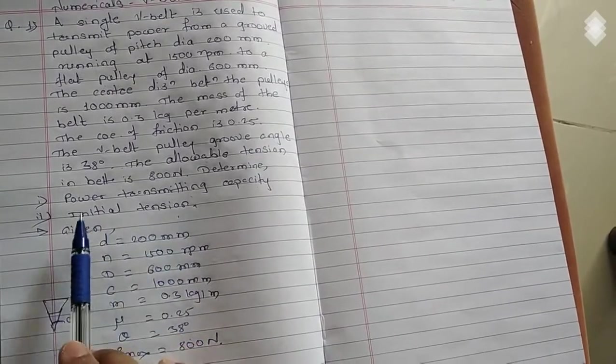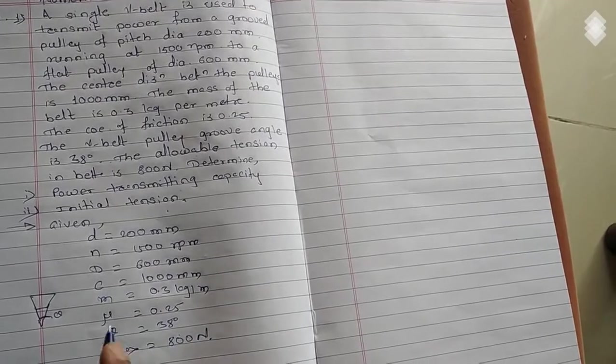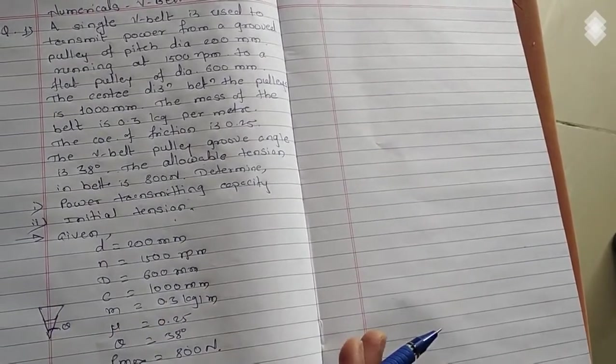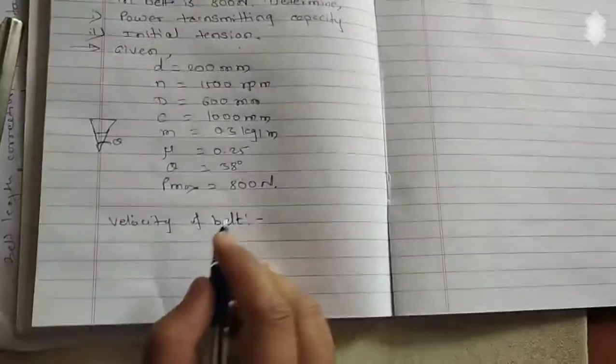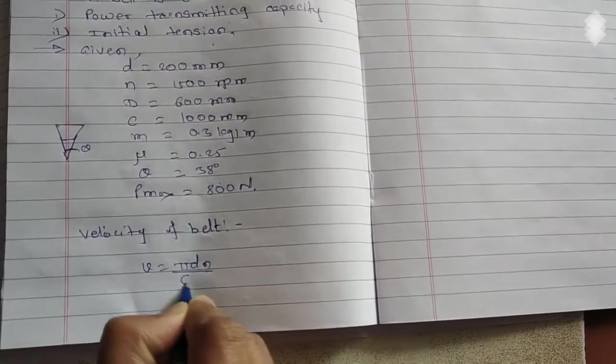To calculate the power transmitting capacity as well as initial tension, first we need to know about P1 and P2, that is the tight side tension and slack side tension of the belt. So let's start from velocity of belt.